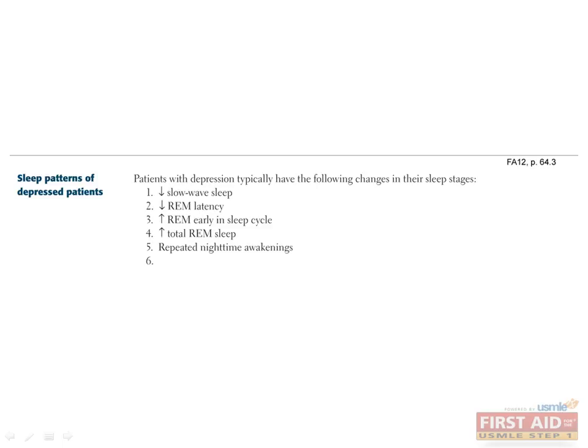Patients with depression typically have numerous changes in their sleep stages. Depressed patients tend to have decreased slow-wave sleep, decreased REM latency, increased REM cycles early in sleep, increased total REM duration, repeated nighttime awakenings, and early morning awakening. Of these sleep changes, early morning awakenings are an important screening question and a fairly specific indicator of depression.